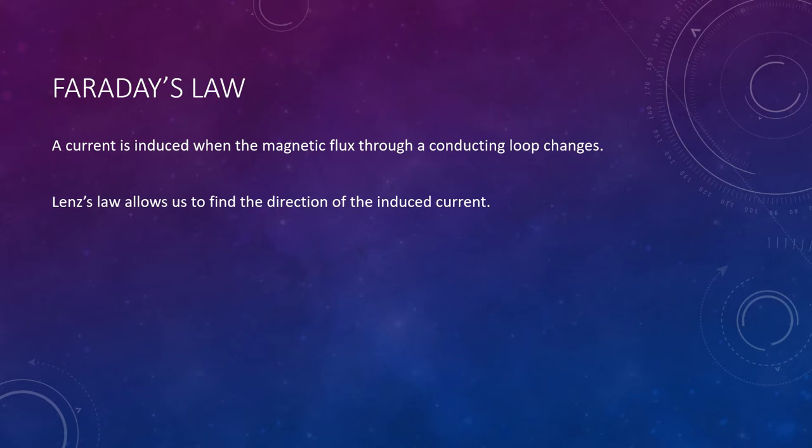We'll begin with a recap. We learned that a current is induced or created when the magnetic flux through a loop changes. Anytime you're changing the field passing through a loop, a current is created. Lenz's Law tells us how to get the direction of that current, but we also need to know the size of the current in many applications, not just the direction.